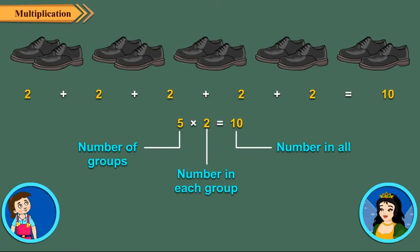We express the statement, 5 groups of 2 each are 10, as 5 times 2 is 10. It is written as 5 into 2 is equal to 10. And 5 multiplied by 2 is equal to 10 is a multiplication fact.